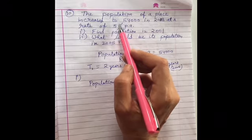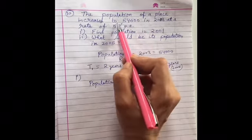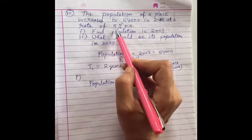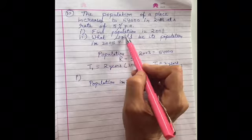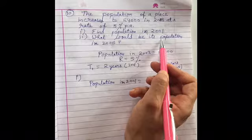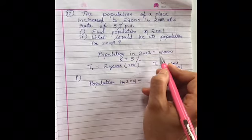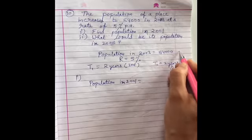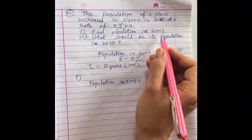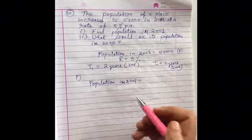The population of a place increased to 54,000 in 2003 at a rate of 5 percent per annum. Find the population in 2001 and what would be its population in 2005. In this, population in 2003 is given to us as 54,000, which is P here, rate is 5 percent, and we have to calculate the population in 2001. So time is two years, so it will be less.